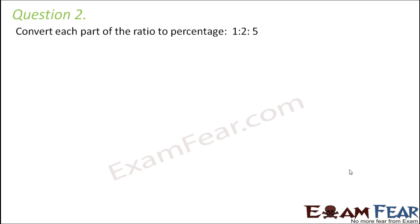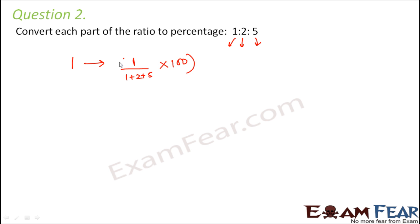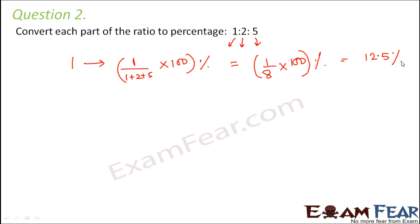Question number 2: convert each part of the ratio to percentage — 1 is to 2 is to 5. This ratio has three parts: 1, 2, and 5. For the first part, 1 divided by the sum of all parts (1 plus 2 plus 5) multiplied by 100 gives 1 by 8 into 100, which is 12.5%. For the second part, 2 divided by 8 into 100 gives 25%.